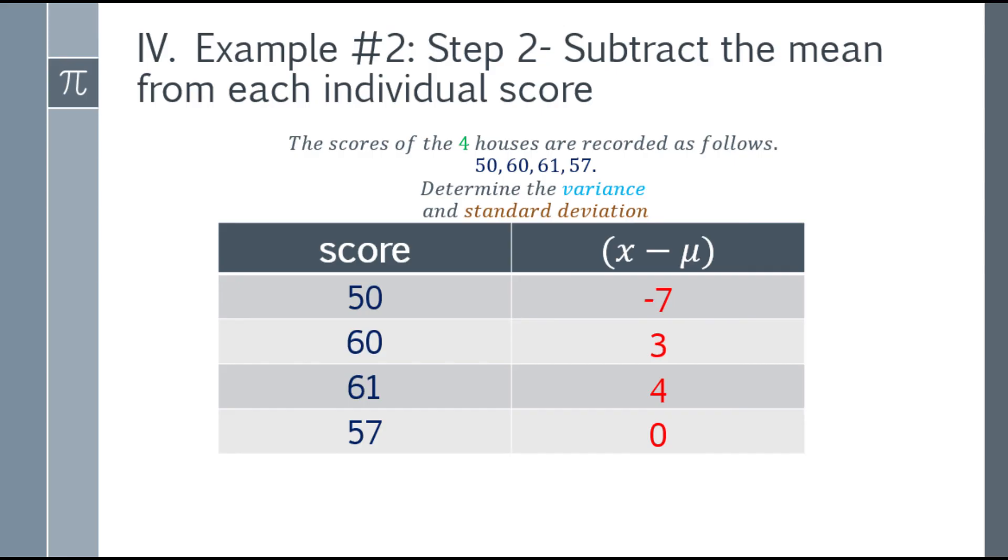Now, step 2, subtract the mean from each individual score. So that will be 50 minus 57. Okay. So that will be negative 7. Then next is 3. Next is 4. And last is 0.